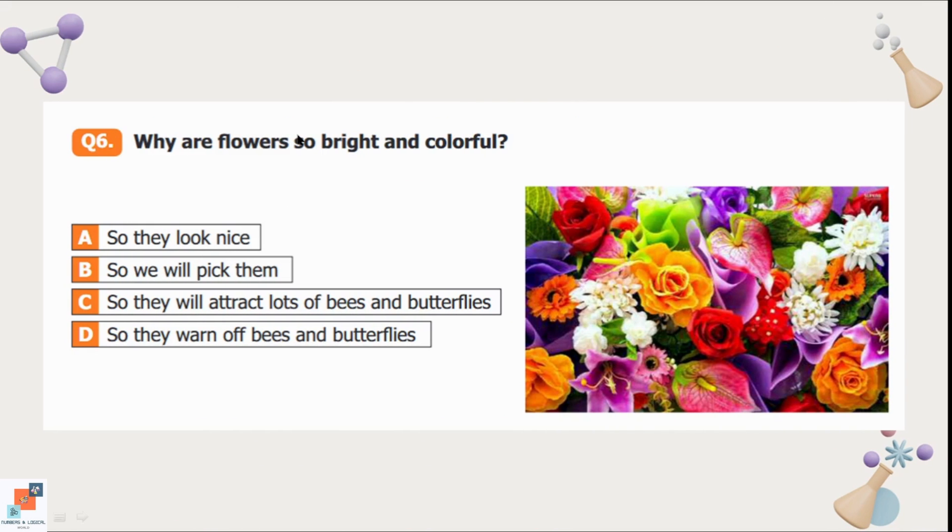Question number 6: Why are flowers so bright and colorful? Option A is so they look nice. Option B is so we will pick them. C is so they will attract lots of bees and butterflies. The last option is so they bore off bees and butterflies. Option C is the correct option. So they will attract lots of bees and butterflies so they could collect the nectar from the flowers.